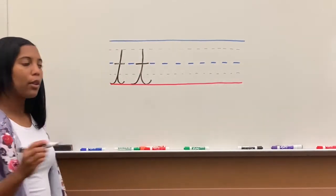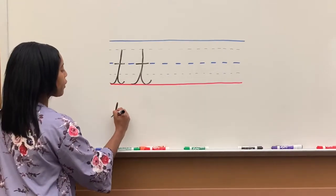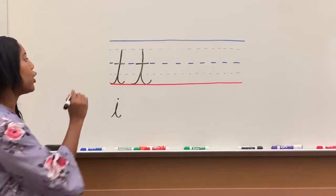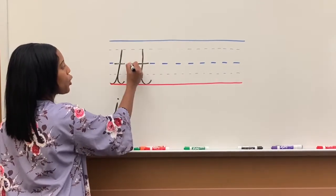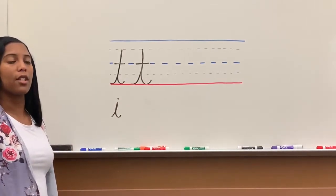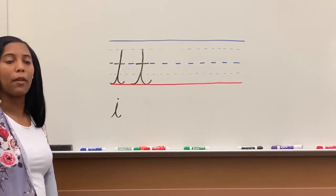Just like when we wrote letter I, we had to finish the letter first before we dot it. Same thing with letter T. You finish the entire letter first before you cross your T. You never stop in the middle of writing to cross the T. You always wait until you are finished.